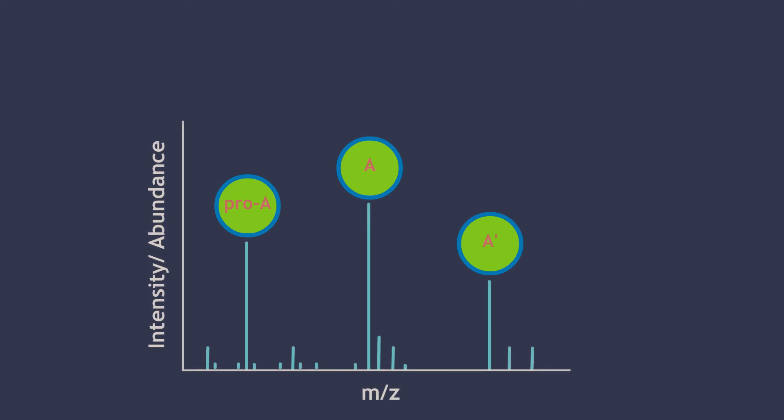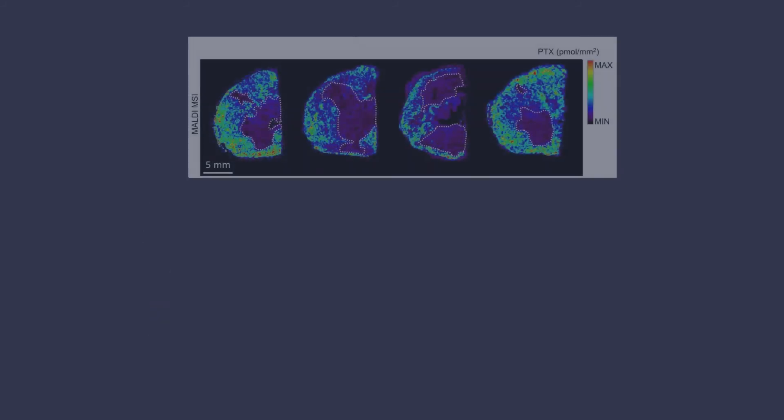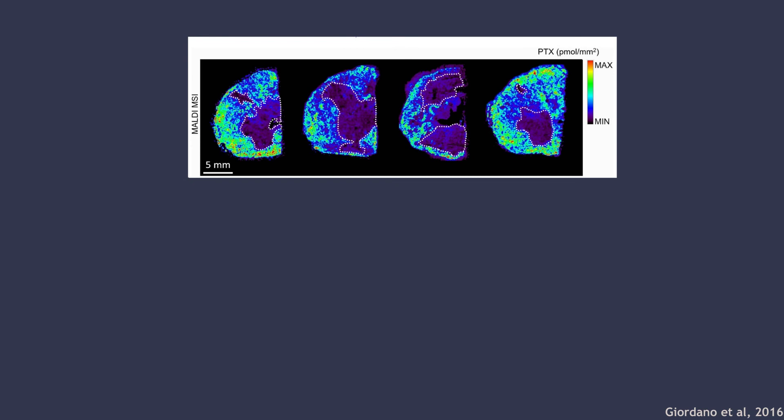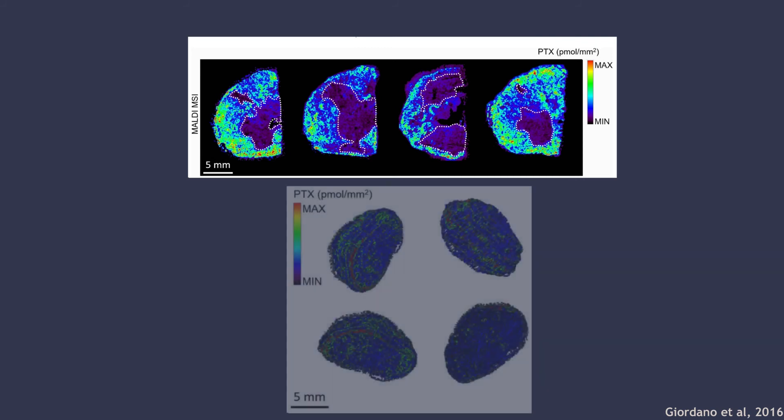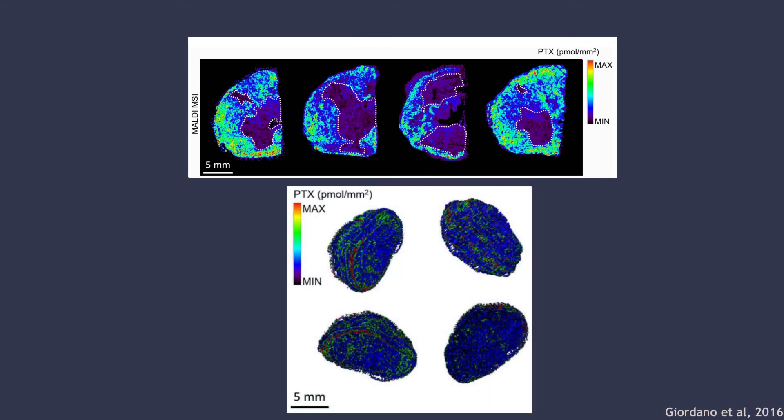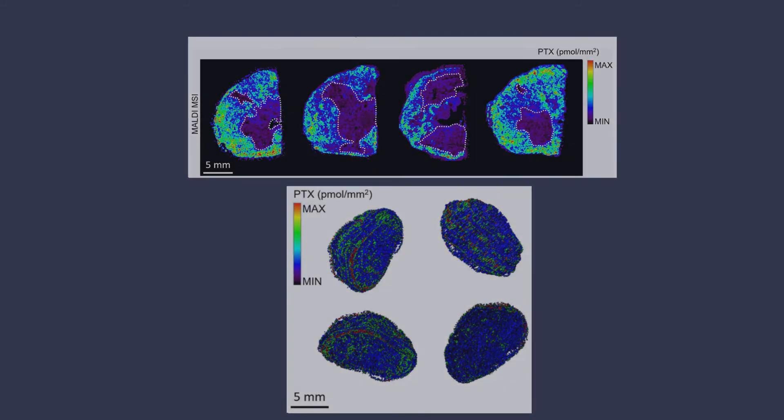In this study, the author tracked the distribution of an anti-cancer drug, paclitaxel, in mouse tumor. The cross-sections of the tumor at varying depths were imaged and pieced together to form a 3D map of drug localization.